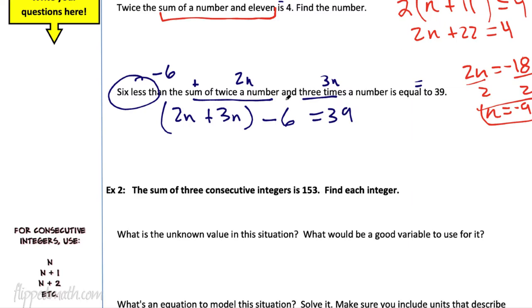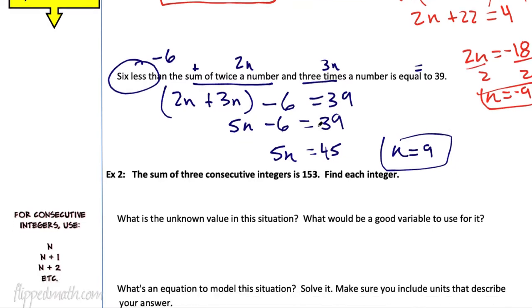So I'm going to call that 2n plus 3n. That is the sum of twice a number and 3 times a number. I'm going to put it in parentheses just because it says sum and I know I want to add those first. But I need 6 less than that, so I'll subtract 6 from it. And then it should all equal 39. There, we're done. Well, we're not done solving, but we're done writing. So 2n plus 3n, we're going to clean that trash up.